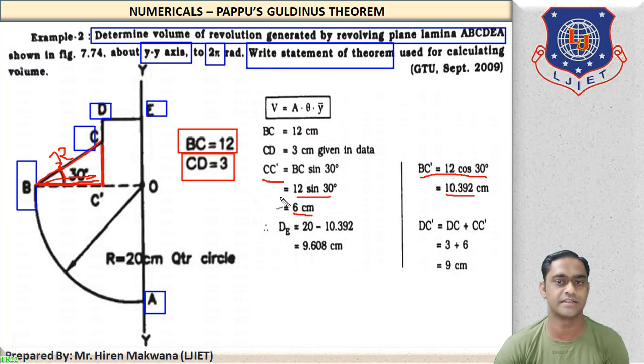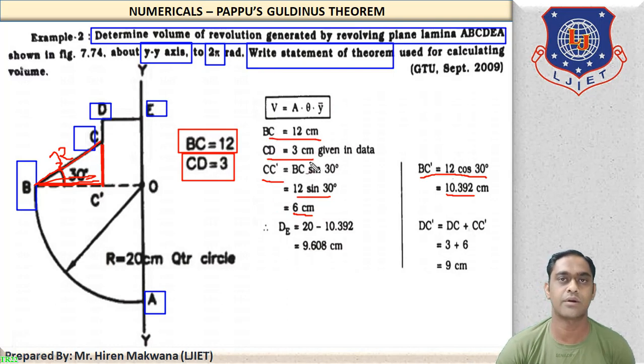Similarly, the vertical distance CC' will be 12 sin 30 as per trigonometry. So 12 sin 30 = 6 cm. This is the value of CC'. The values BC and CD are already given in the data.